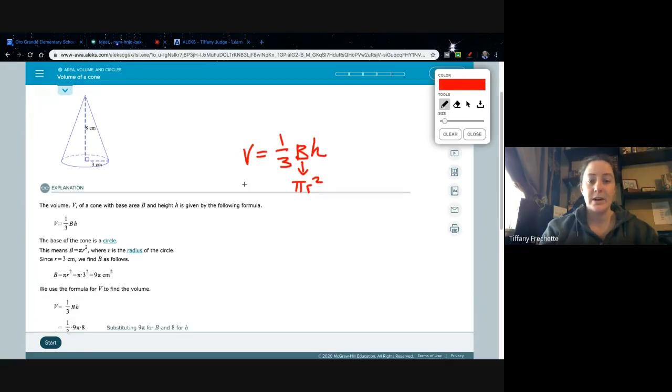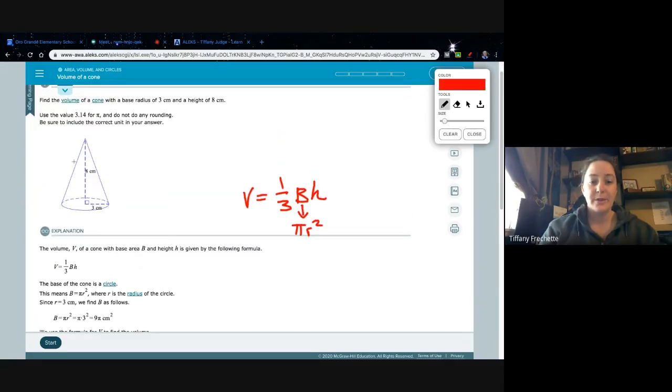Okay, so if we know that it's this equation, then we can just simply plug things in. So we have volume equals 1/3. Our base, instead of writing B, I'm going to write pi times r. Remember, r is the radius of the circle. So we have 3 squared. And then we have to multiply by this h has to do with the height of the cone. So height of the cone is 8.